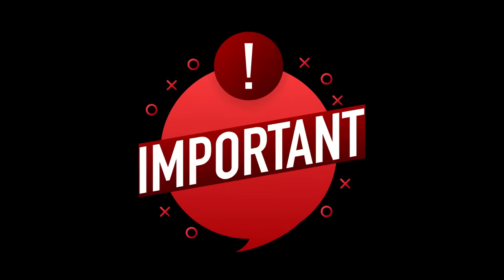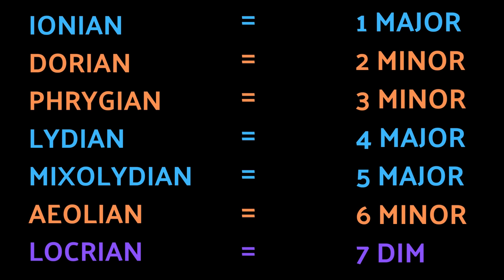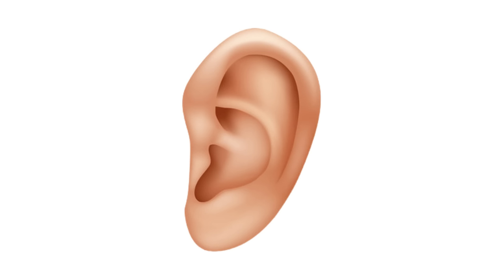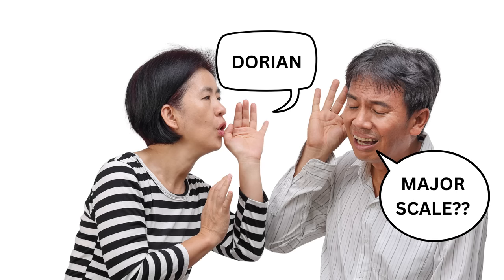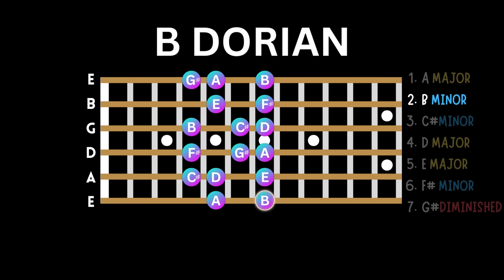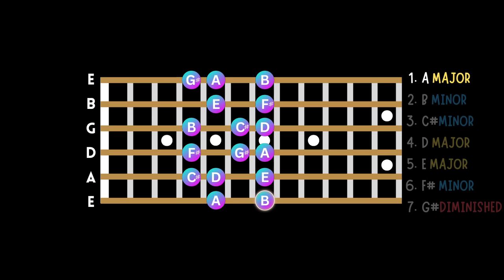It's important to know that without context — i.e. the correct chord played behind the mode — it would be difficult to distinguish one mode from another, and your ear would probably just hear the major scale. For example, if you were to play B Dorian, the second mode of the major scale in the key of A, over its corresponding chord B minor, you would hear B Dorian. However, if you were to then play this same Dorian mode over the one chord, A major, it would simply just become the A major scale, or Ionian mode.